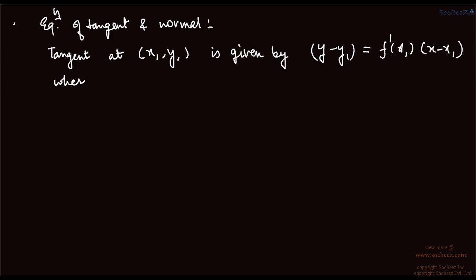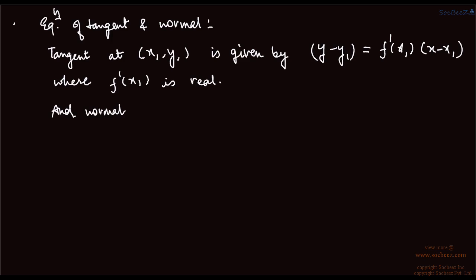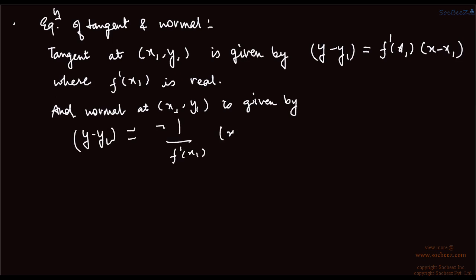The normal at point (x1, y1) is given by: Y minus y1 equals minus 1 upon f-dash(x1) times X minus x1, when f-dash(x1) is non-zero. It should not be zero because it is in the denominator.